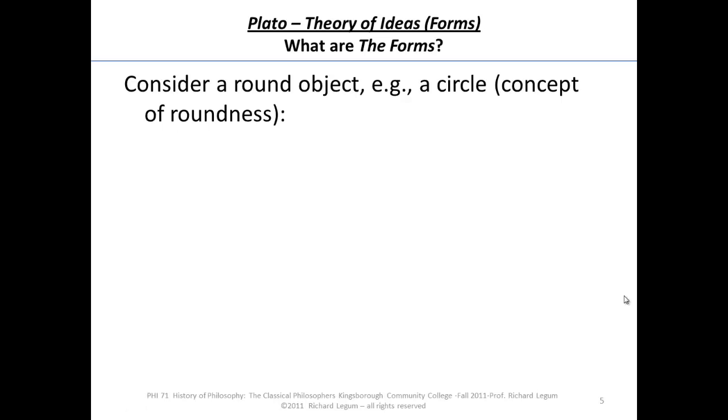Think about a round object, a circle. We have the concept of roundness, and this is going to help us understand what these forms are supposed to be. First of all, if we're thinking about the circle, we have a name, what we call it - a word. In this case, it's circle. So we have the name, the word circle, which applies to all of the circles.